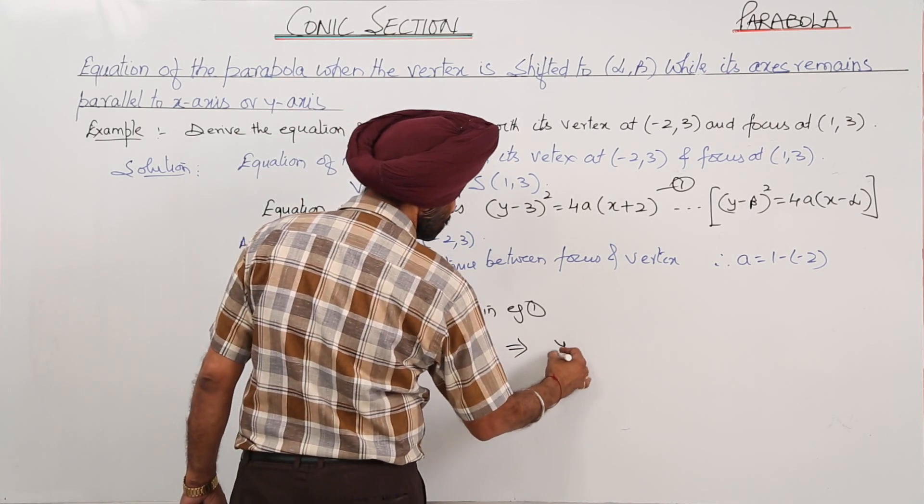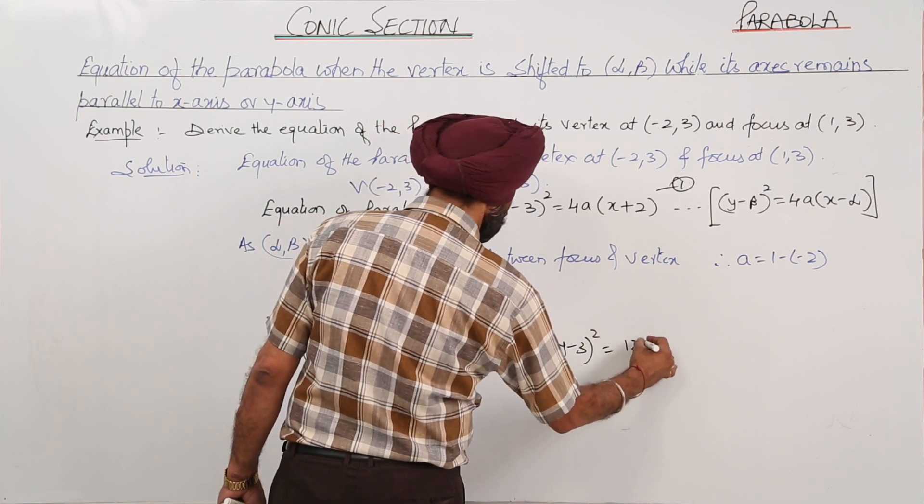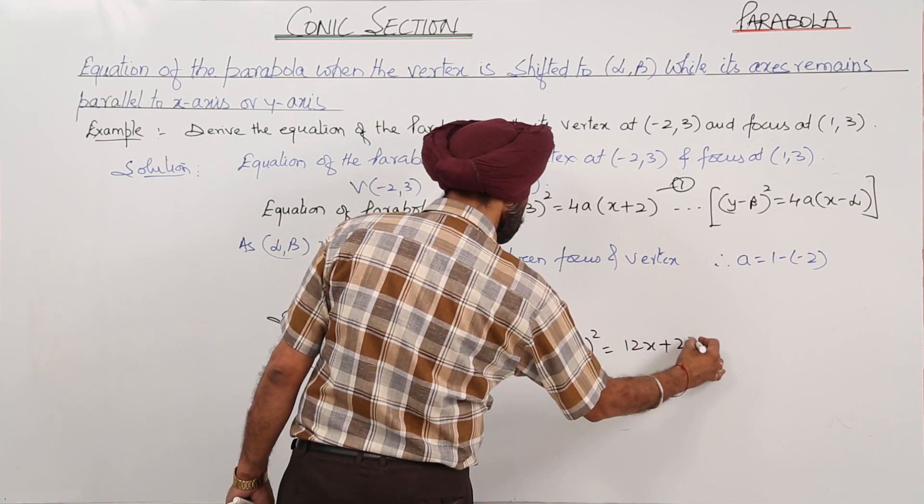Now, this is equal to (y-3)², y² is equal to 12x + 24.